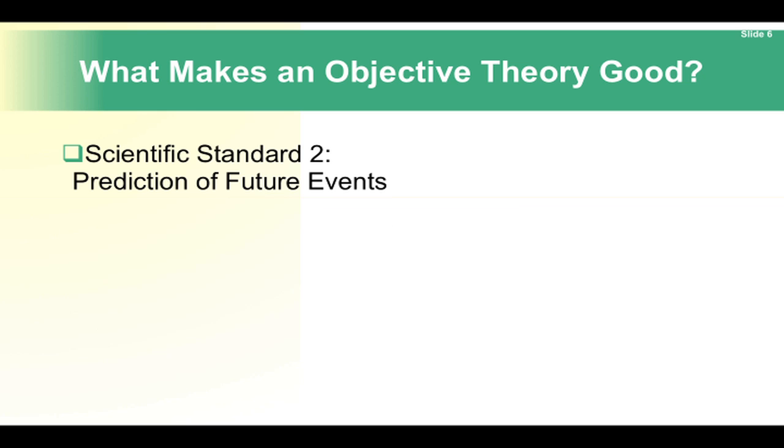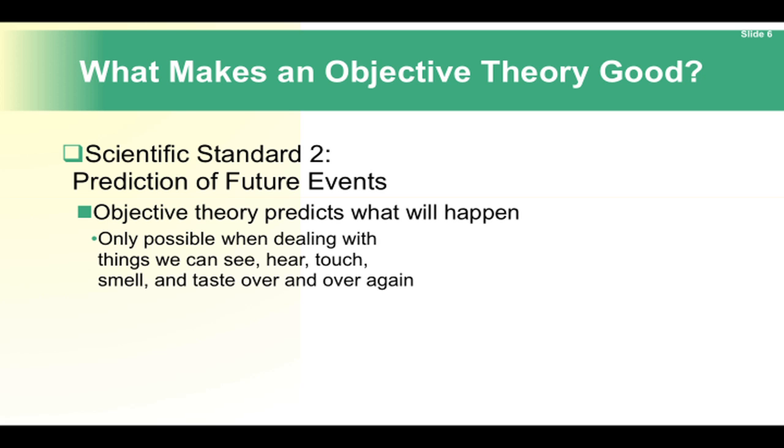Scientific Standard 2: Prediction of future events. Objective theory predicts what will happen. It's only possible when dealing with things we can see, hear, touch, smell, and taste over and over again. In the social sciences, a certain humility on the part of the theorist is advisable.